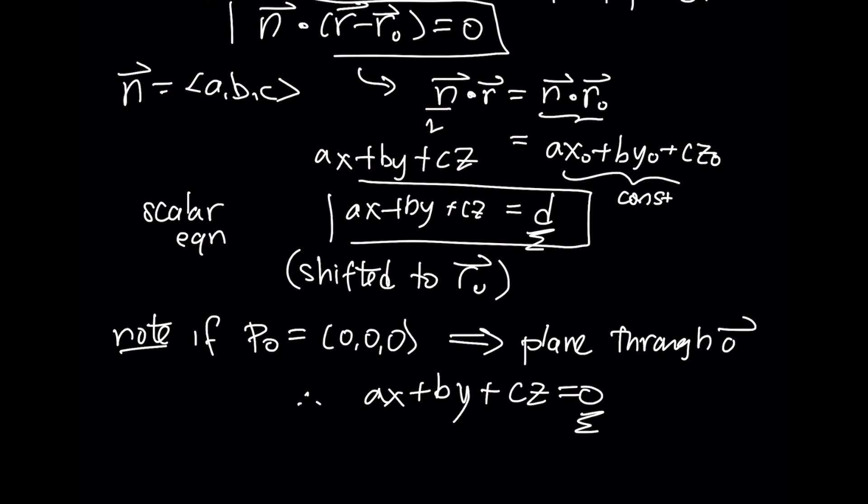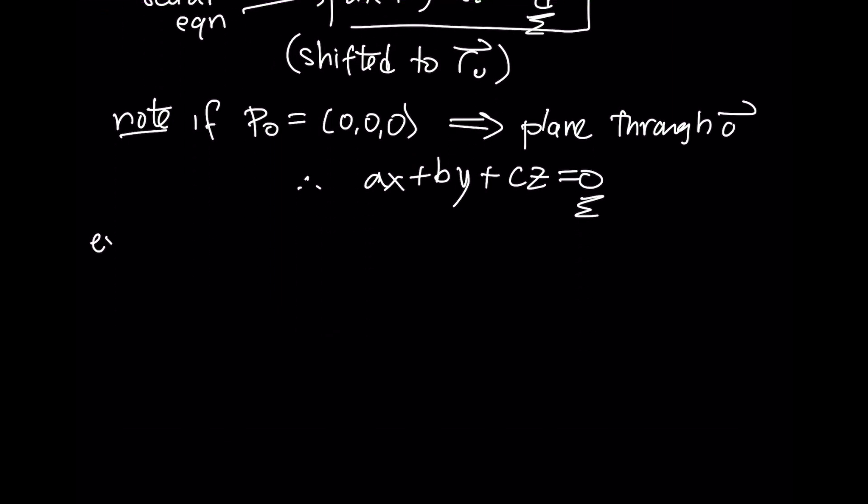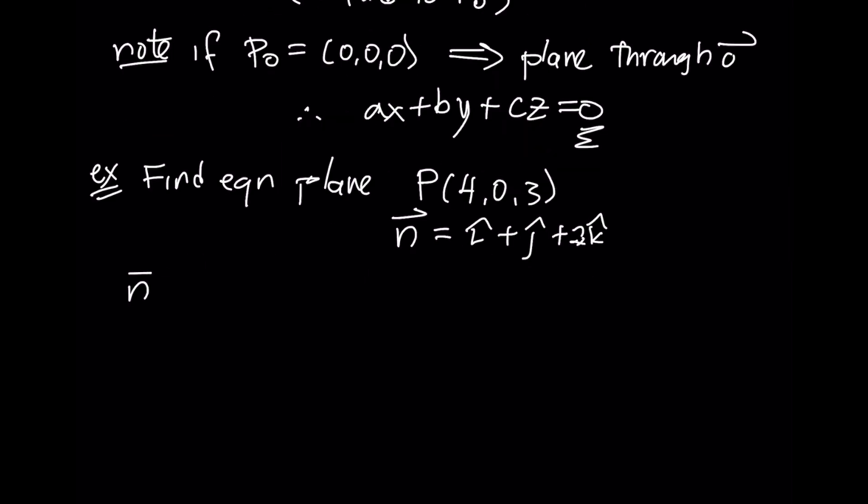Let's find the equation of a plane that goes through the point (4, 0, 3) and has a normal vector of i + j + 2k. The normal vector is <1, 1, 2>, R₀ would be <4, 0, 3>.